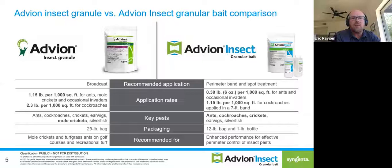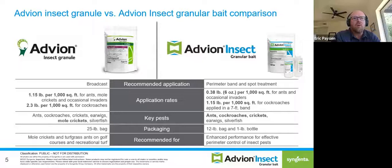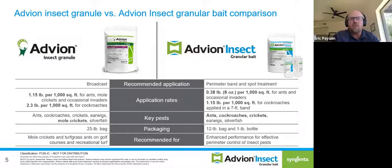The old product is really more of a broadcast application technique, whereas the new granule bait is really a perimeter band or spot treatment specifically targeting professional pest control. The rate has also changed significantly. It was 1.15 pounds per thousand square feet for ants, crickets, and occasional invaders on the original, and 2.3 per thousand for cockroaches. Those rates have dropped significantly due to the high palatability and effectiveness of the new bait — down to 0.38 pounds, or only six ounces per thousand for ants and occasional invaders, and 1.15 for cockroaches. The real benefit is less product to haul around and less product to put out.